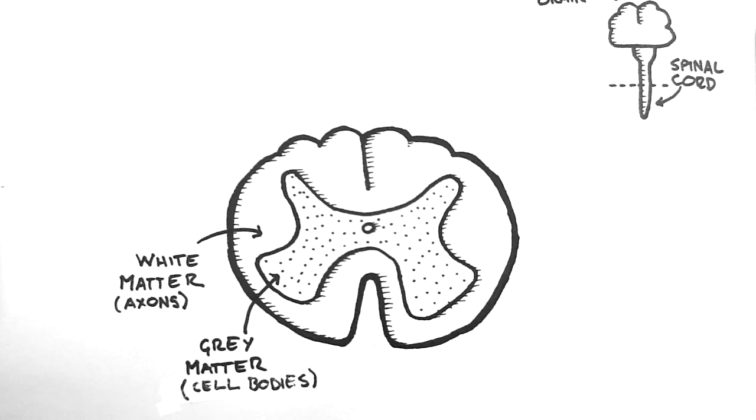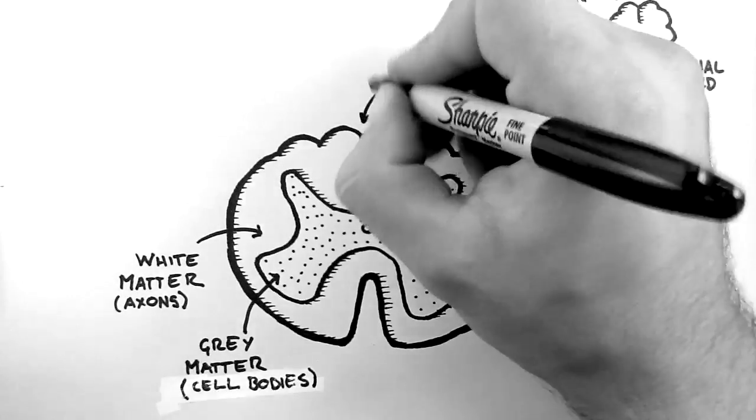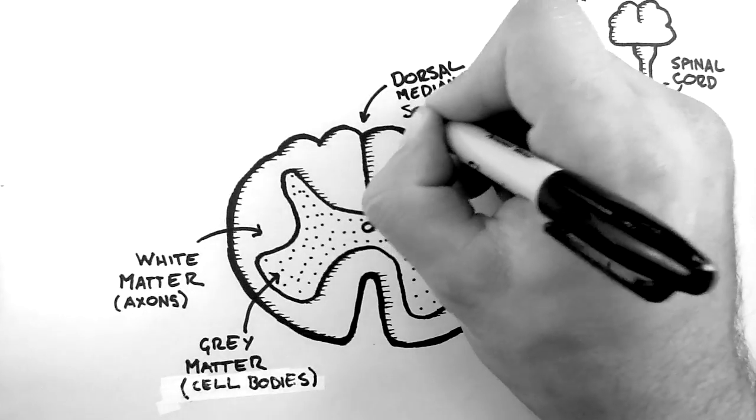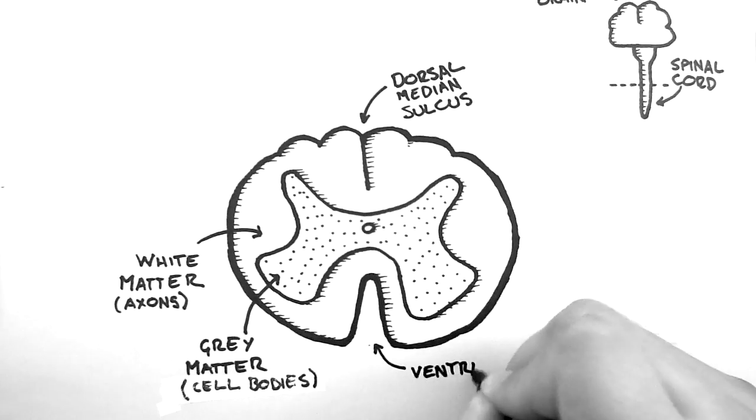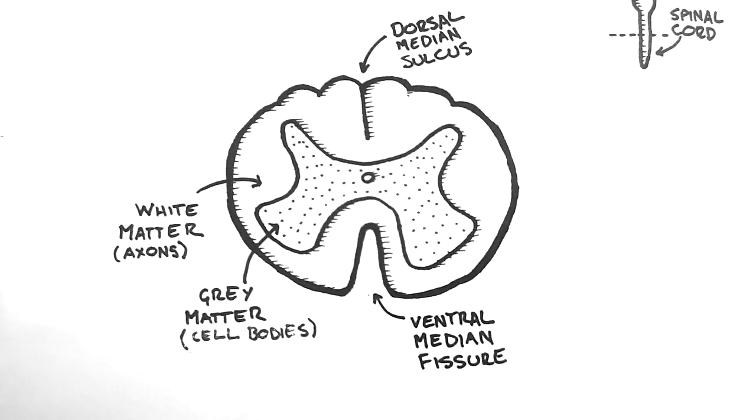Other notable features include the dorsal median sulcus, which is this groove at the back of the cord, and the ventral median fissure, which is the larger groove at the front of the spinal cord. These features help us to orientate the spinal cord.